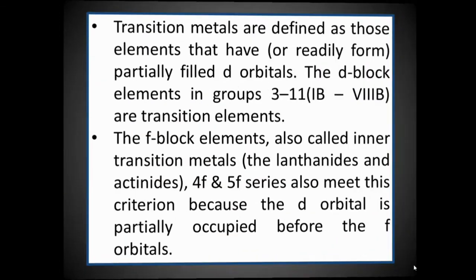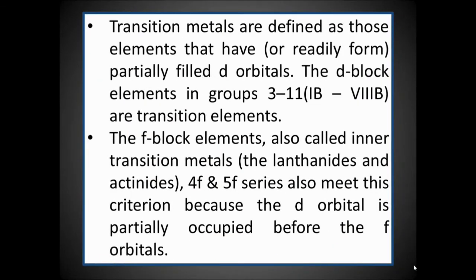Transition metals are defined as those elements that have or readily form partially filled d orbitals. The d-block elements in groups 3 to 11, considered as 1B to 8B, are transition elements. The f-block elements, also called inner transition elements, are metals. The lanthanides and actinides — 4f and 5f series — meet this criteria because the d orbital is partially occupied before the f orbital.